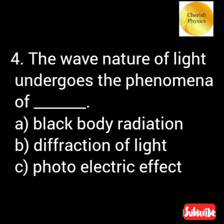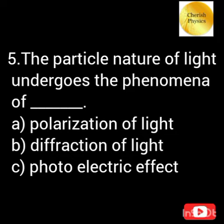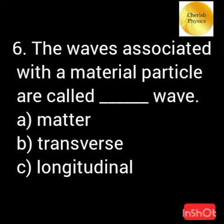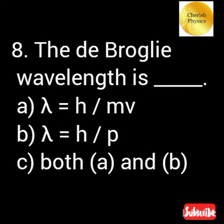The wave nature of light undergoes the phenomena of. The particle nature of light undergoes the phenomena of. The waves associated with the material particle are called as. The de Broglie waves are termed as. The equation of de Broglie wavelength is.